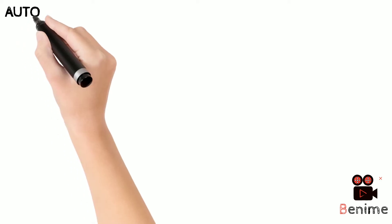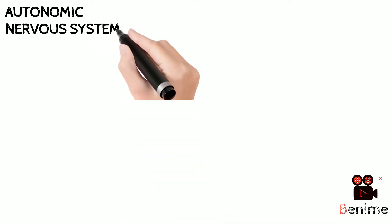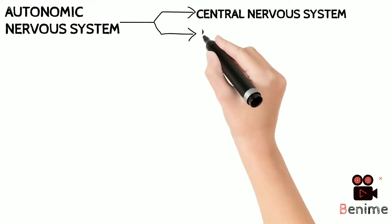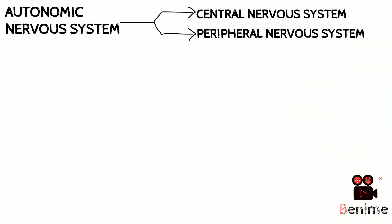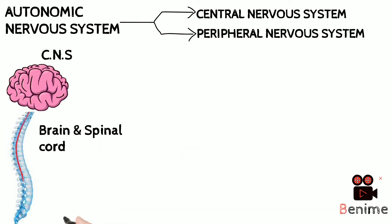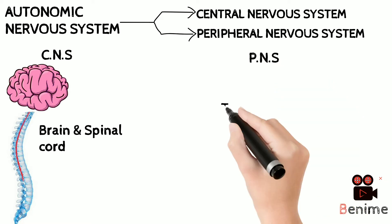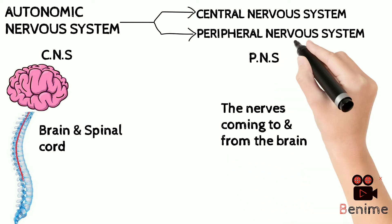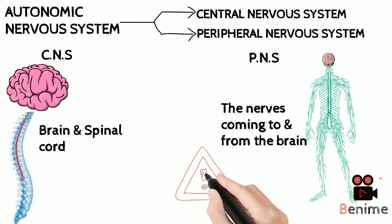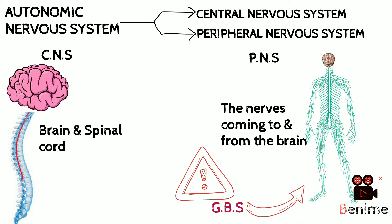Before jumping into anything, let's take a look at our autonomic nervous system, which is the center to control our involuntary actions and can be broadly divided into two parts: the central and the peripheral nervous system, where the CNS comprises the brain and spinal cord and the PNS comprises the nerves coming to and from the brain. One important point to remember is that GBS only attacks the PNS, so in our discussion we will be paying more attention towards it.